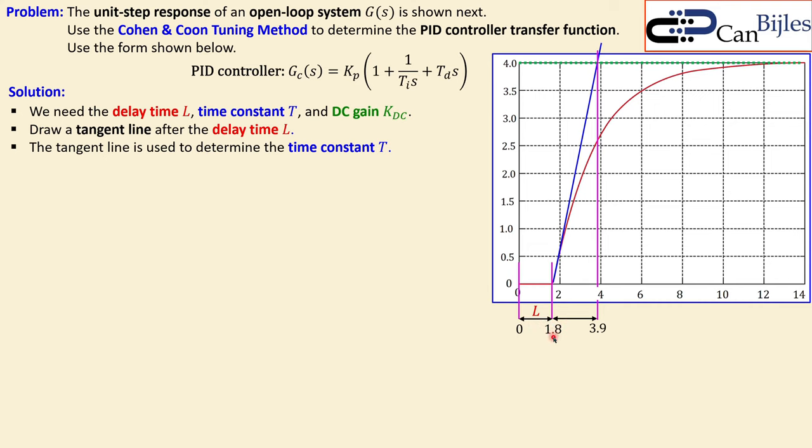Now let's look at the unit step response in the closed loop configuration with our designed PID controller. The response shows an overshoot of approximately 56%, which is very high. The final value is 1 and the delay of 1.8 seconds is clearly visible. There was no overshoot specification given, but this result is not satisfactory. Let's see if we can tune the PID controller parameters to reduce this overshoot significantly.